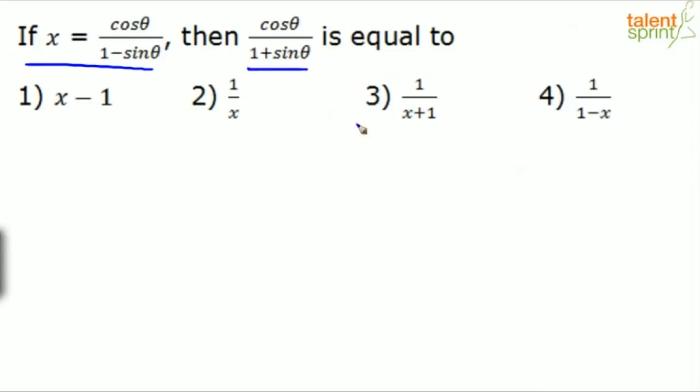Do not try to use formulae. Like we have been discussing, substitute some value of theta there. The given equation is x equals cos theta by 1 minus sine theta. Now assume some value of theta here and find out what is the value of x with respect to that theta. So can we take theta as 90? No, you cannot take theta as 90. Hence, avoid taking theta as 90.